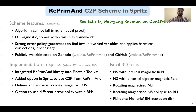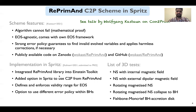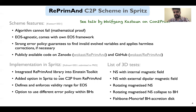The next natural step was to implement this C2P scheme in Spritz, which we did by integrating first the Reprimand library into the Einstein Toolkit framework, and then we added a wrapper function in Spritz in order to call the C2P from the Reprimand library. After its implementation, we performed a number of demanding 3D tests using Spritz, which I list here.